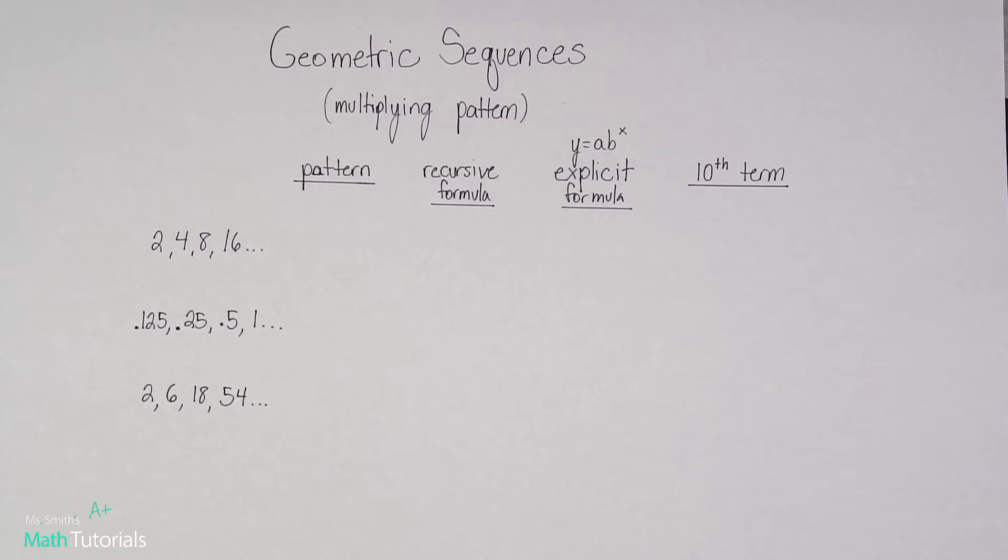It's still going to be a pretty big number, but a little more manageable. Let's figure out the pattern here. So we're going from 2 to 4 to 8 to 16.